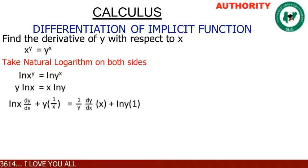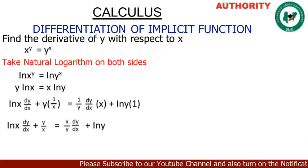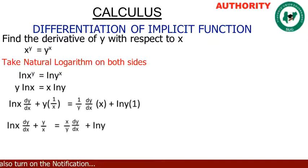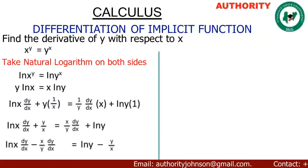Opening the brackets and simplifying further: ln(x)·dy/dx + y/x = (x/y)·dy/dx + ln(y). Now let's collect the terms containing dy/dx on one side: ln(x)·dy/dx minus (x/y)·dy/dx = ln(y) minus y/x.